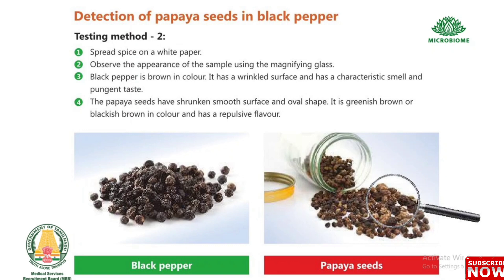Detection of papaya seeds in black pepper, Method 2: Spread the spice on white paper and observe using a magnifying glass. Black pepper is brown in color with a wrinkled surface and a characteristic pungent smell and taste. Papaya seeds have a shrunken, smooth surface, oval shape, are greenish-brown or blackish-brown in color, and have a repulsive flavor.